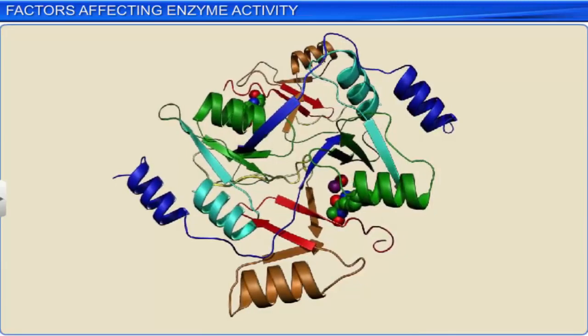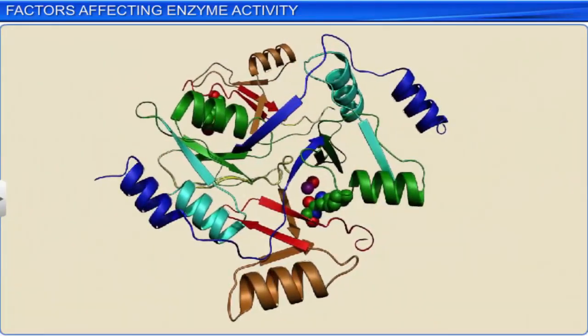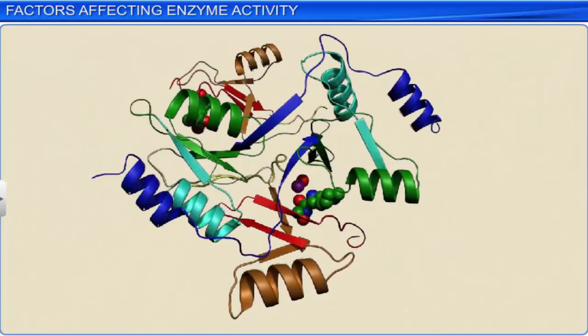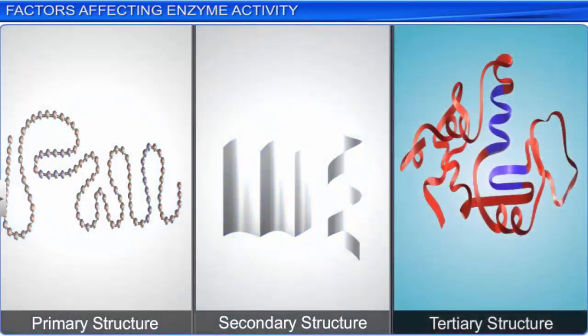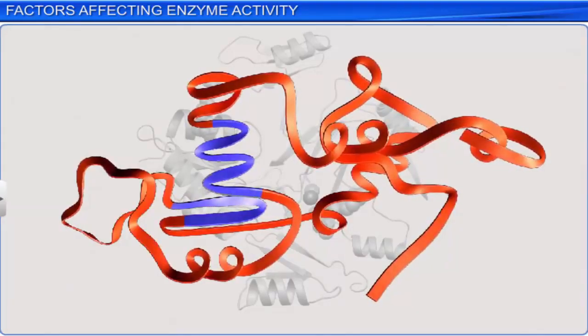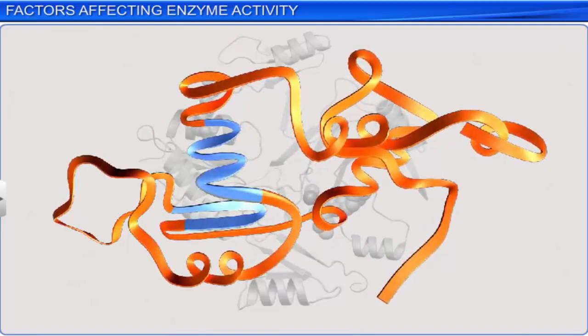Enzymes are mostly proteins and they increase the rate of chemical reactions. Just like proteins, enzymes also have a primary, secondary, and tertiary structure. A change in a few factors can affect the activity of enzymes and can alter the tertiary structure of the protein.